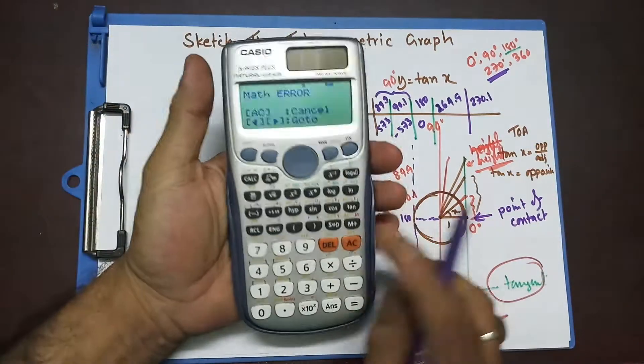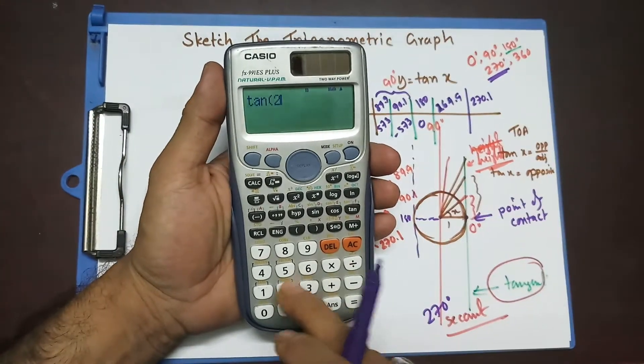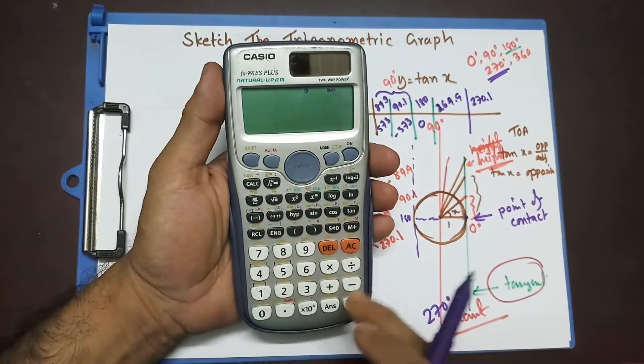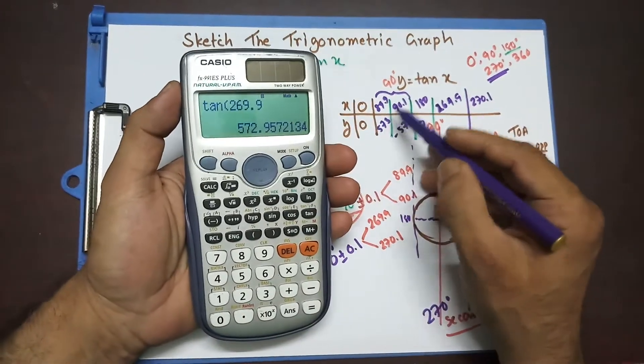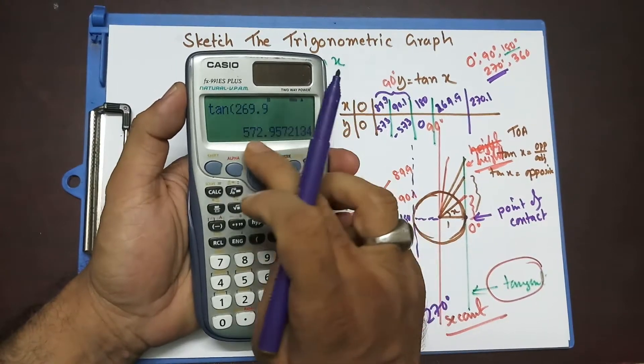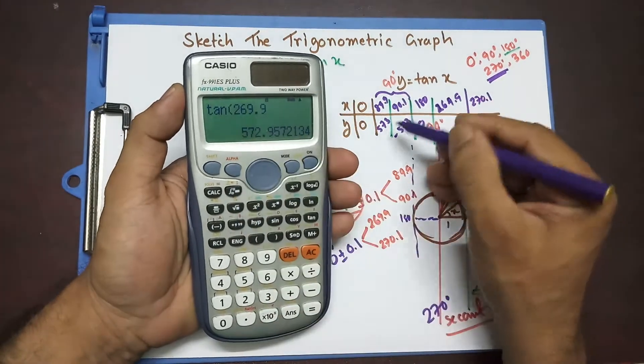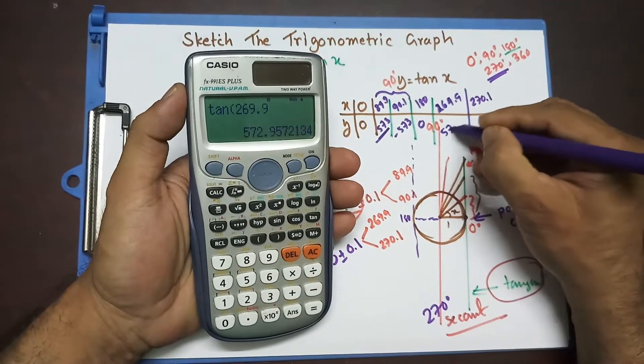So, let's see what happened at 269.9. So, tan 269.9, look, I'm getting 572. Whatever I got, correct to one whole number is 573. So, that's 573. We already got it. So, this is going to be 573.